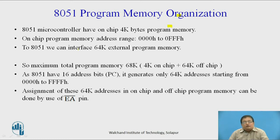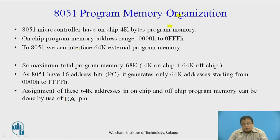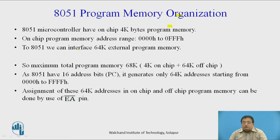To the 8051, we can also interface 64K external program memory. So the internal 4K plus external 64K means physically we can have 68K program memory connected to the 8051 — that is 4K on-chip plus 64K off-chip external memory. However, the 8051 has only 16 address bits, so it is capable of generating only 64K addresses starting from 0 to FFFFH.